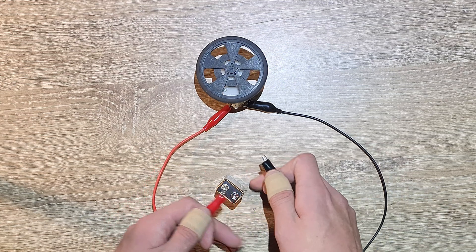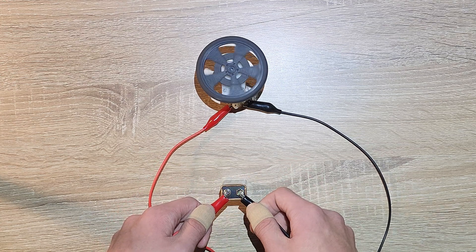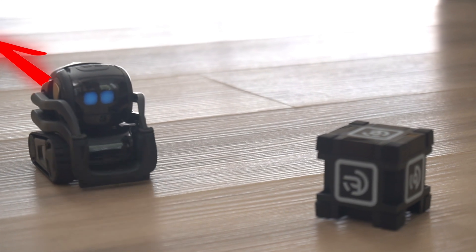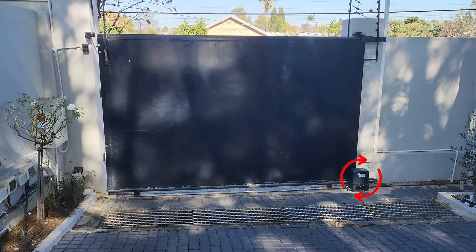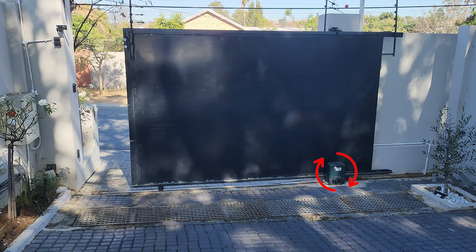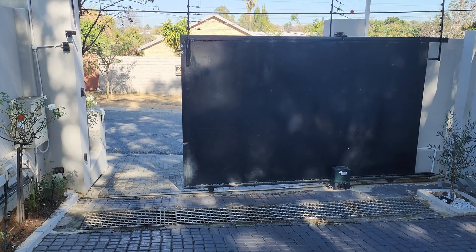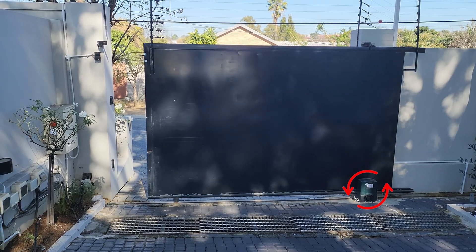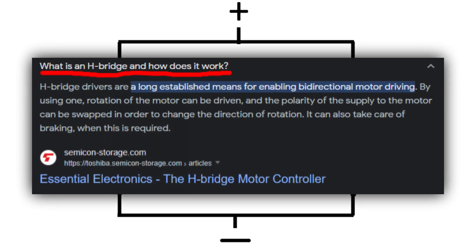Here are some examples of where you'd use H-Bridges. If you have a robot on wheels and you want it to move forward and also reverse, you would use an H-Bridge. Similarly, an electric gate that opens and closes by the push of a button requires an H-Bridge so the motor can rotate in both directions. Those were just some examples — so let's look at what an H-Bridge actually is.